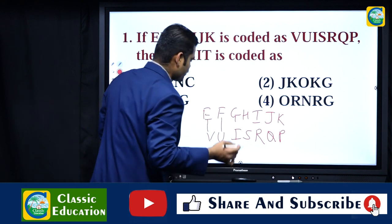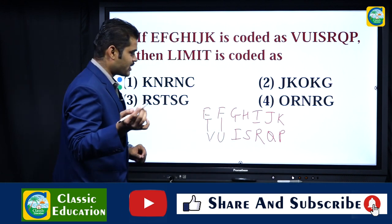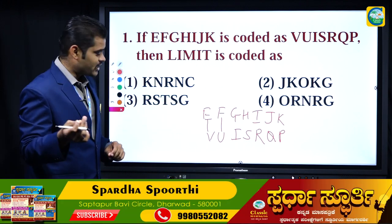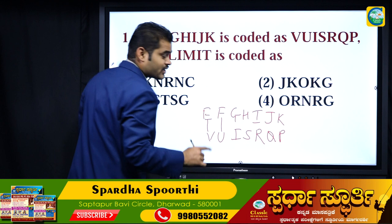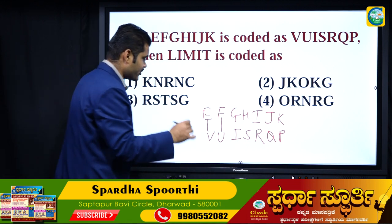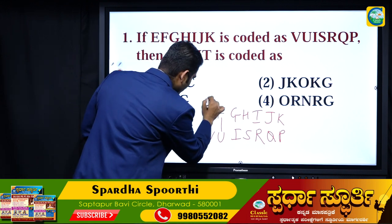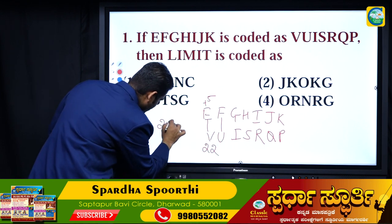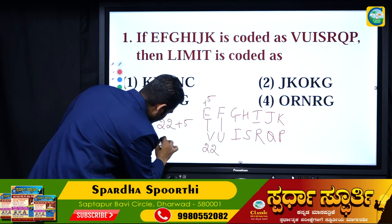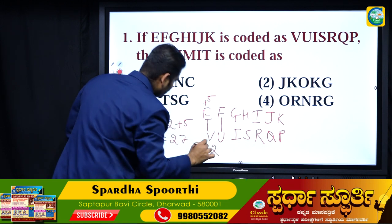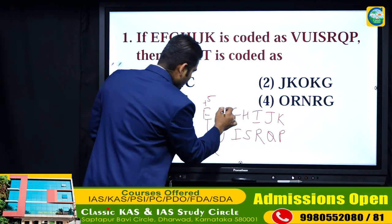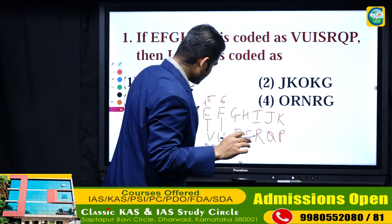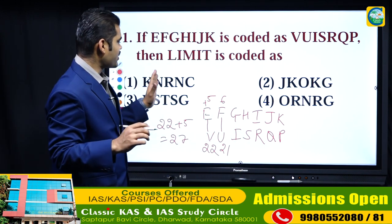So this is a coding-decoding question based on opposite letters. You are going to use opposite alphabet pairs. For example, E is the 5th letter, its opposite is V which is the 22nd letter — 22 plus 5 equals 27. So F is 6, U is 21. E decodes to its opposite letter.